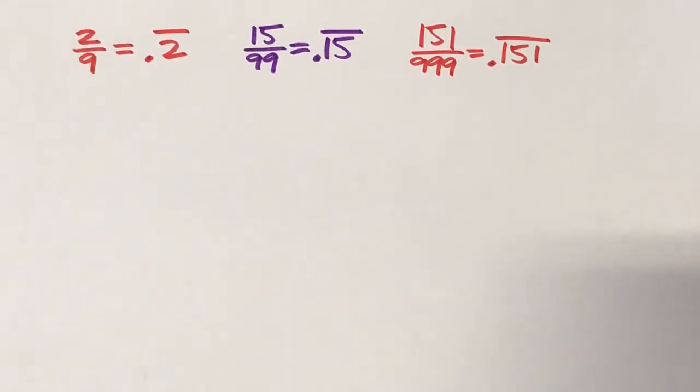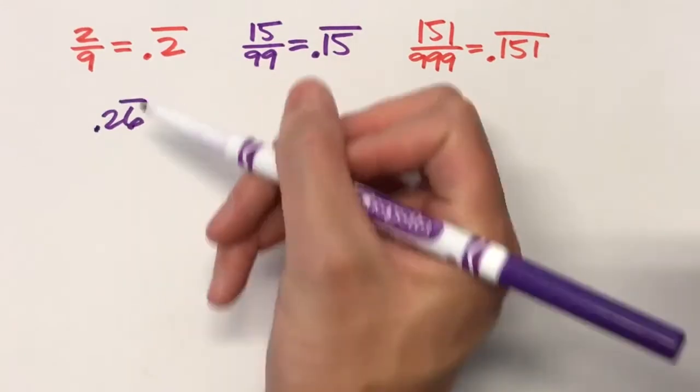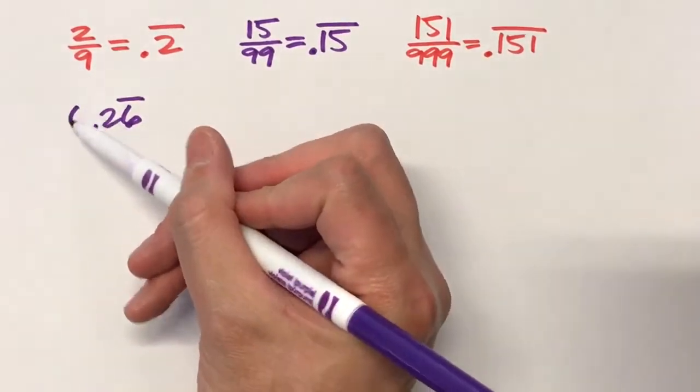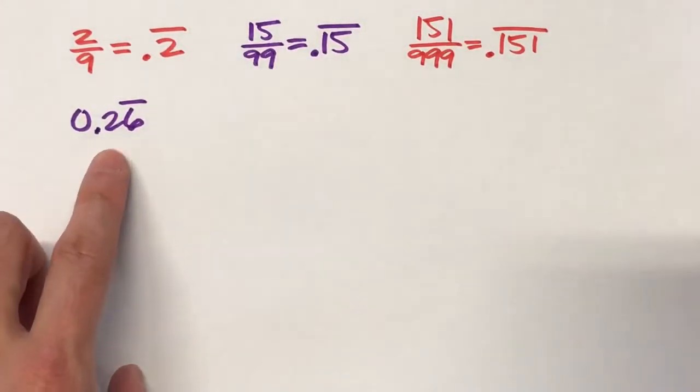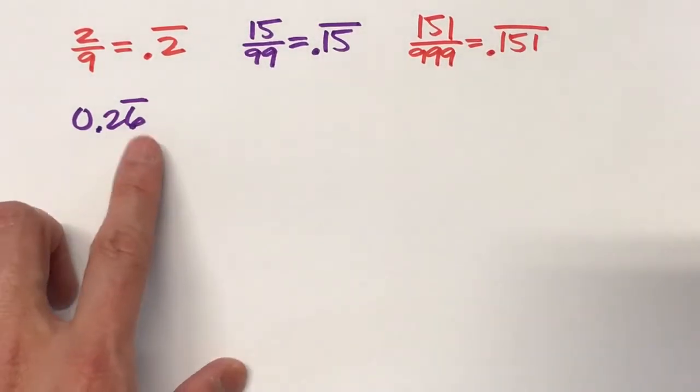But today, we had some more repeating decimals that didn't follow this simple pattern. For example, 0.26 where just the 6 is repeating. Notice in this case, if it was both the 2 and the 6 repeating, it'd be pretty simple. It'd be 26/99 because there's two digits repeating. But only one digit's repeating and the 2 is not.